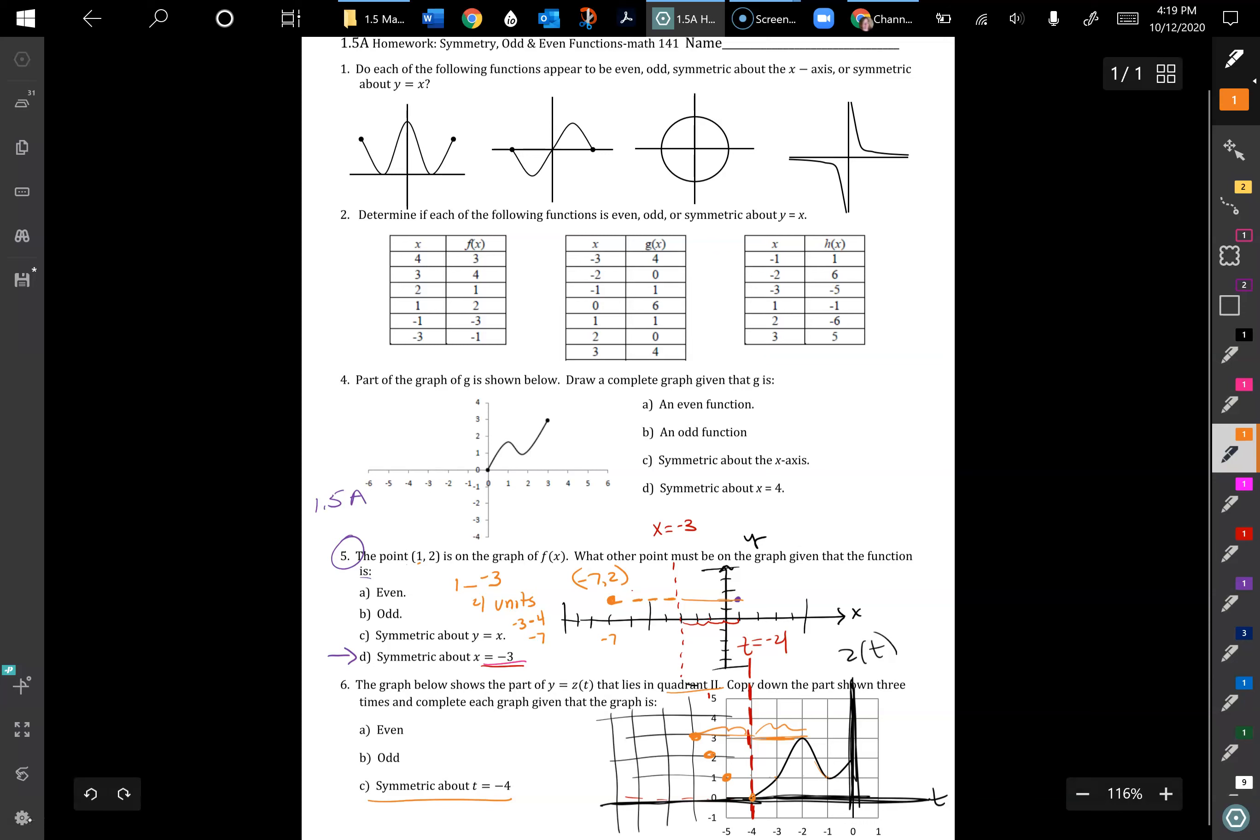This dip down here at t equals negative 1 is three spaces away, so I have to be three spaces away from t equals negative 4. So 1, 2, 3, right about there. And then the zero is four spaces away. So then I have my general shape and I go ahead and make that in.